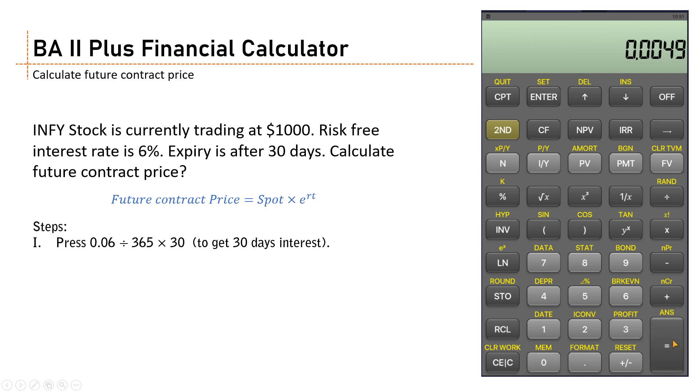Now you get the interest. Now you convert this interest to a continuous rate. For that, you have to press the second key.